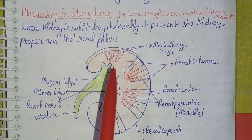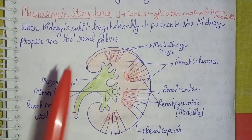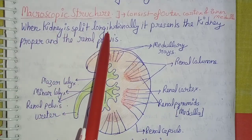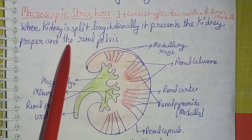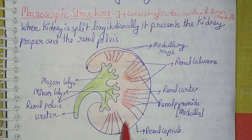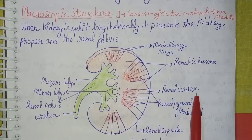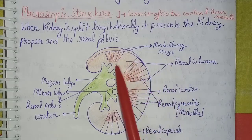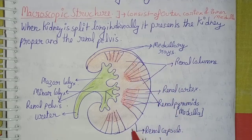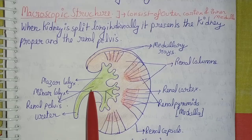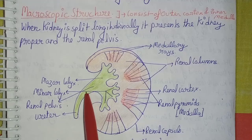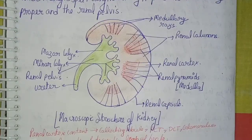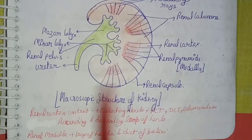Coming to the macroscopic structure of the kidney: it consists of an outer cortex and an inner medulla. When the kidney is split longitudinally, it presents two parts — the kidney proper and the renal pelvis. As you can see in the diagram: the renal cortex, renal pyramids (medulla), medullary rays, renal columns, renal capsule, minor calyces, which unite to form major calyces, which open into the renal pelvis, and then the ureter.